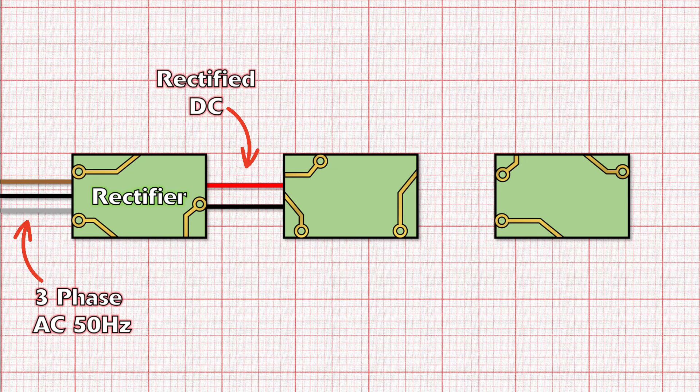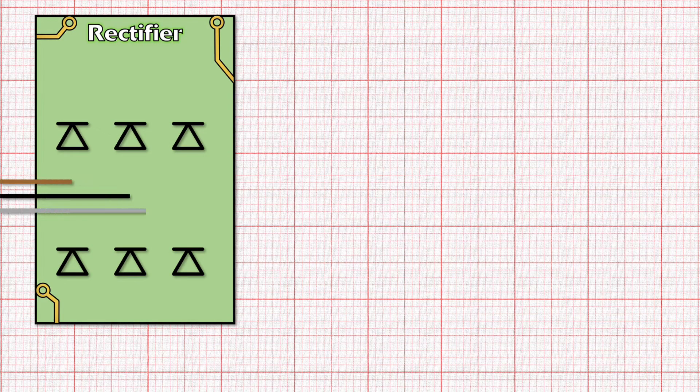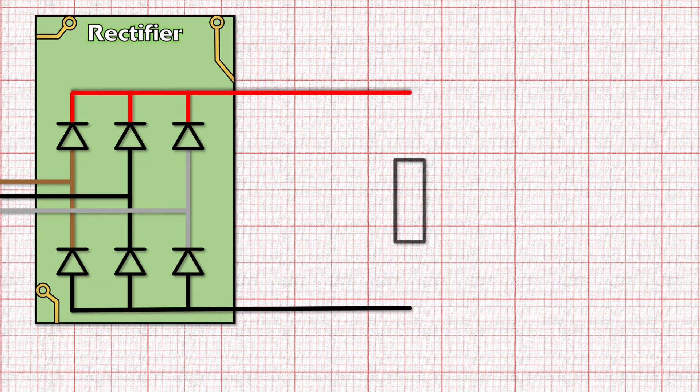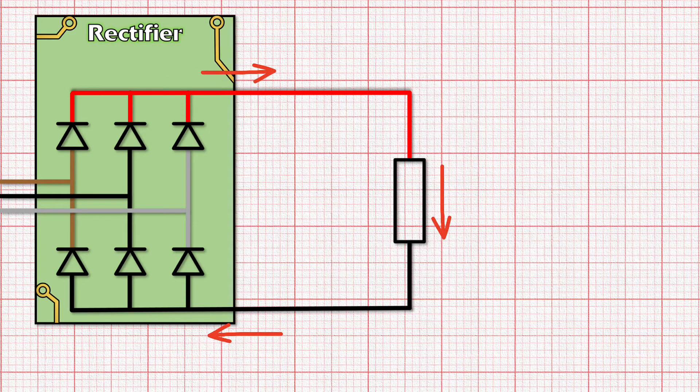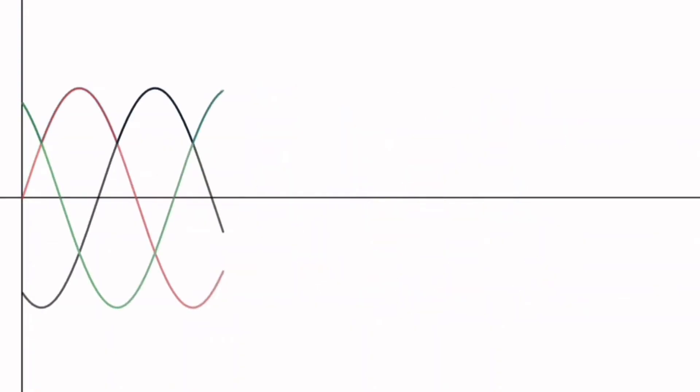A three-phase rectifier consists of six diodes connected together in a specific way. These diodes are like one-way valves for electricity and therefore only allow current to pass through them one way. As the three-phase supply passes through the diodes, it will change the waveform so that it looks like this, which is a pretty wobbly DC waveform.